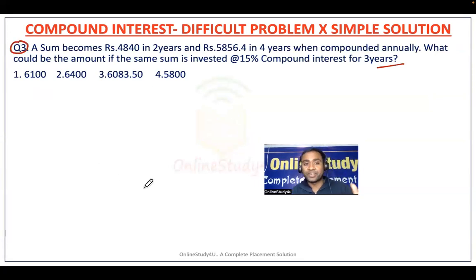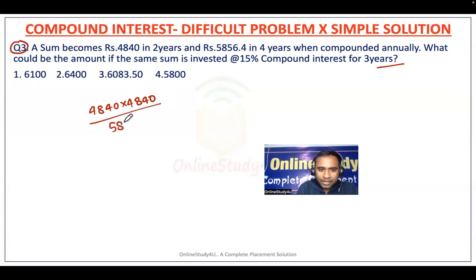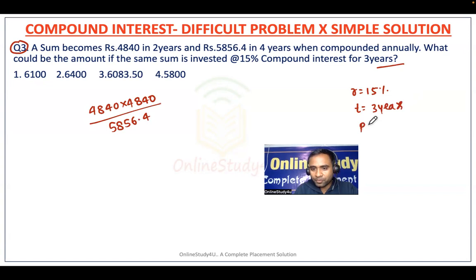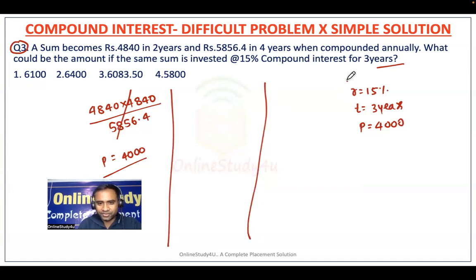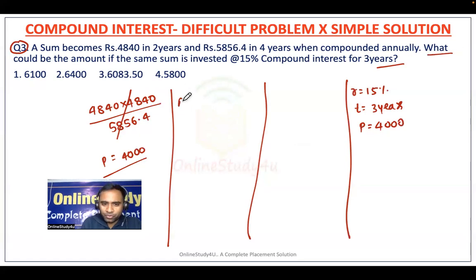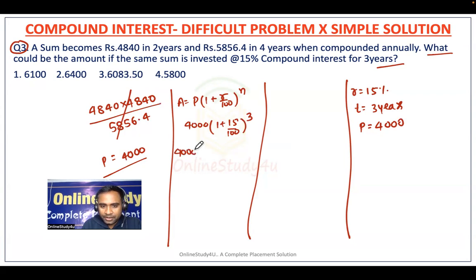Now we will make this problem a little more complicated. A sum becomes 4840 in two years and 5856.4 in four years when compounded annually. What would be the amount if the same sum is invested at 15% rate for three years? First we need to find the principal. When you solve, you get principal = 4000. Now we have to calculate compound interest. Amount = P × (1 + r/100)^n = 4000 × (1 + 15/100)^3 = 4000 × (23/20)^3.